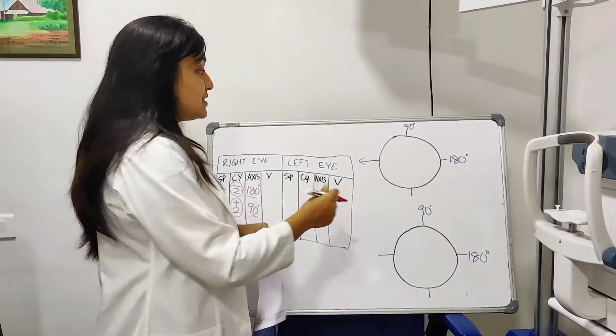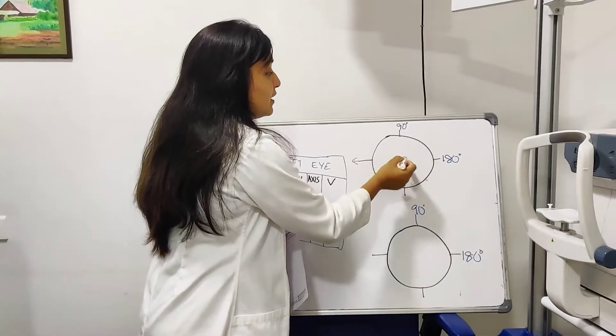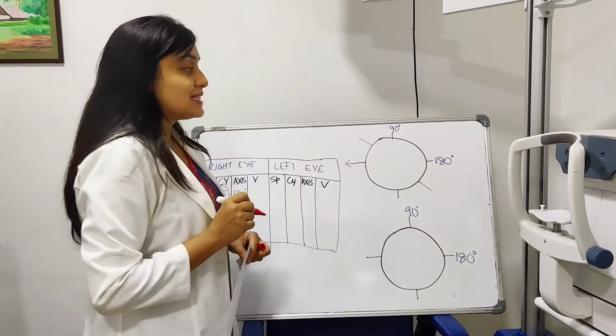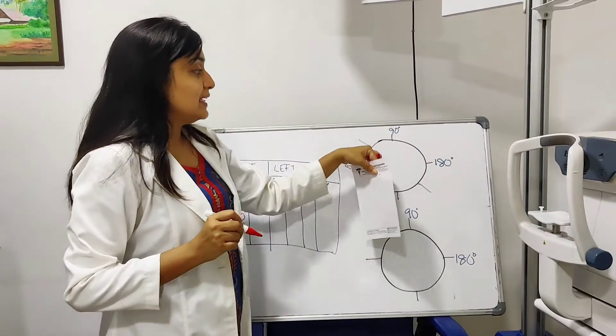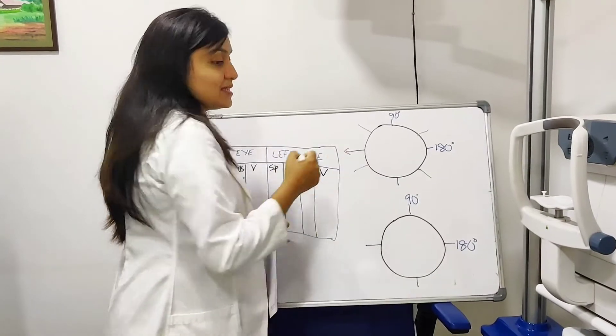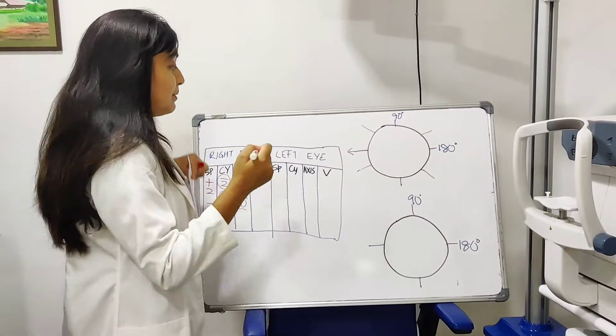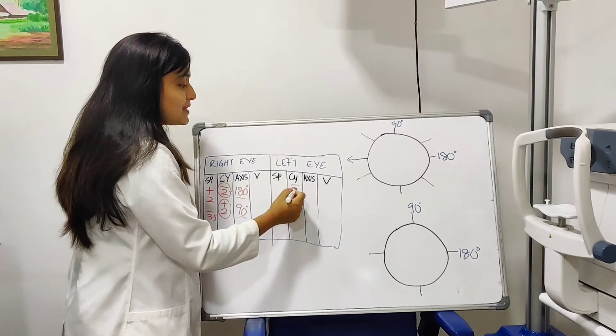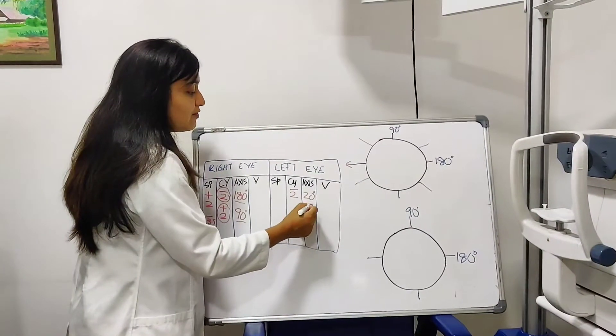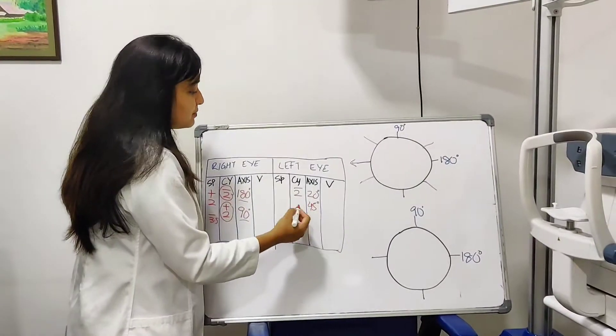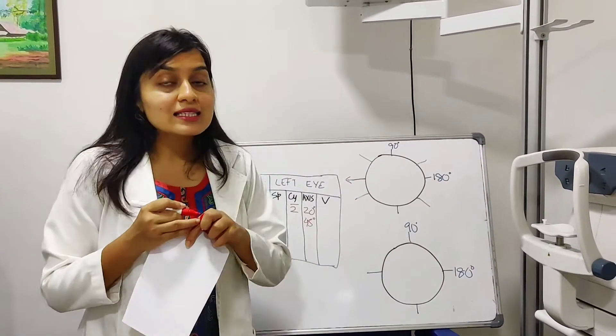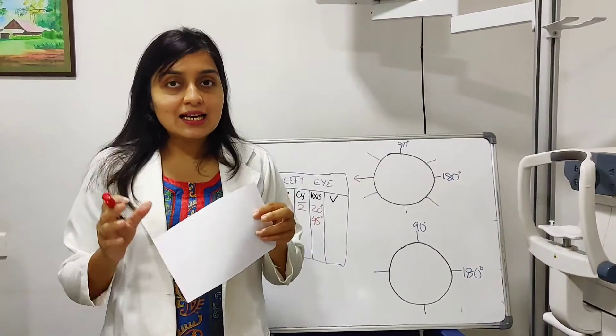So say if you had an injury somewhere on the cornea over here, you might land up with an axis like this where the cylinder is like this or the cylinder might be like this. So the differences will be over here. So it will still be something like minus 2 at 20 degrees or minus 2 at 45 degrees. So these are the axeses. So axis is very important in a cylinder number.